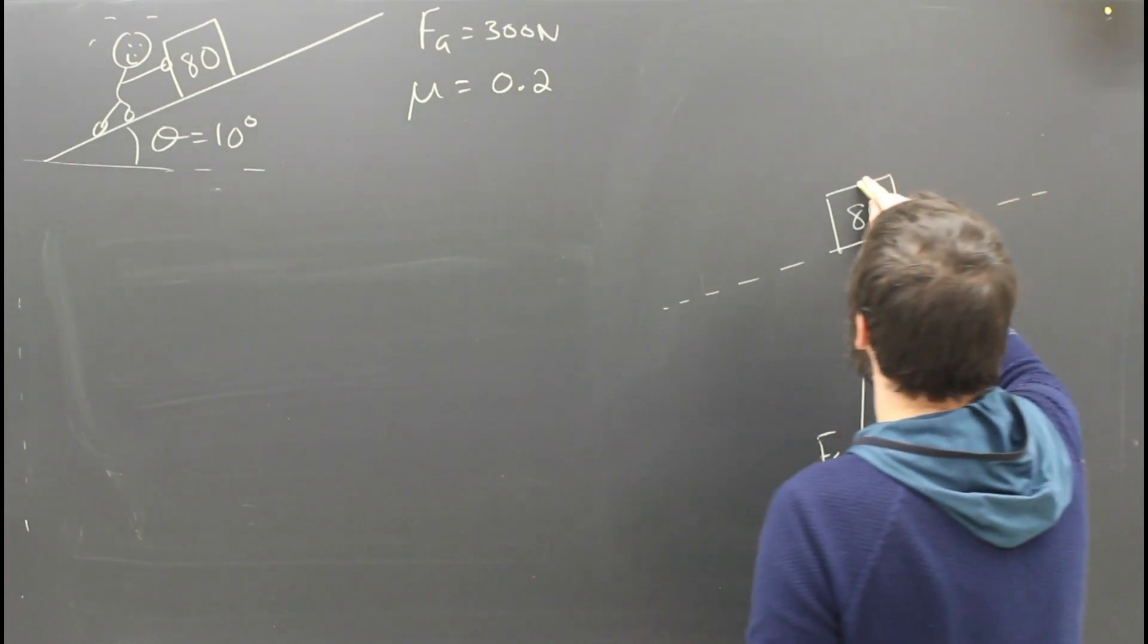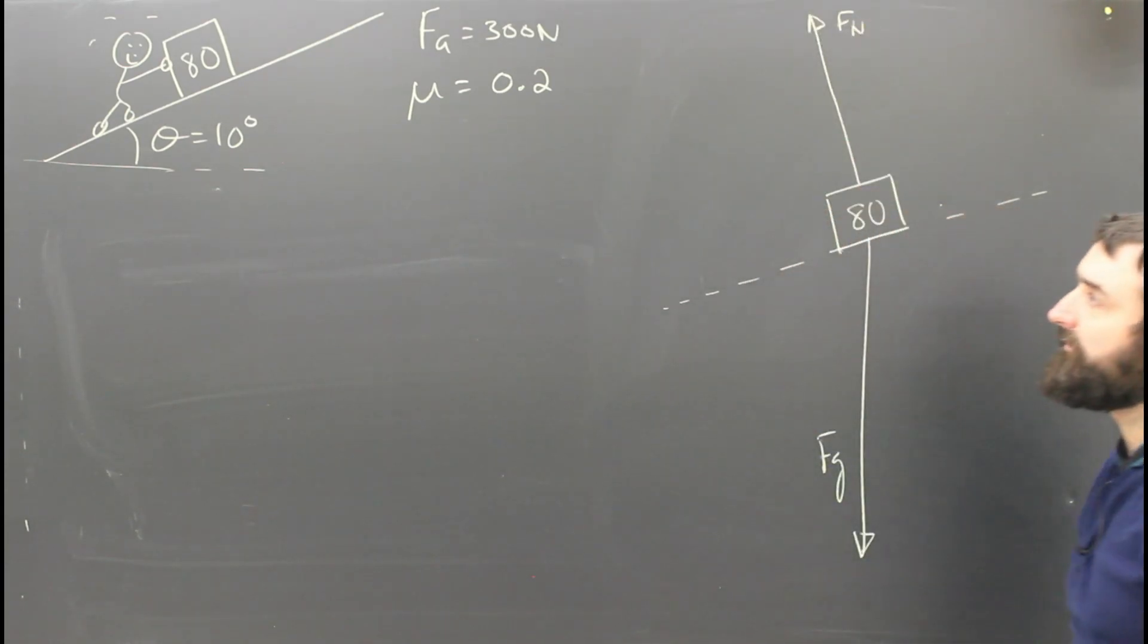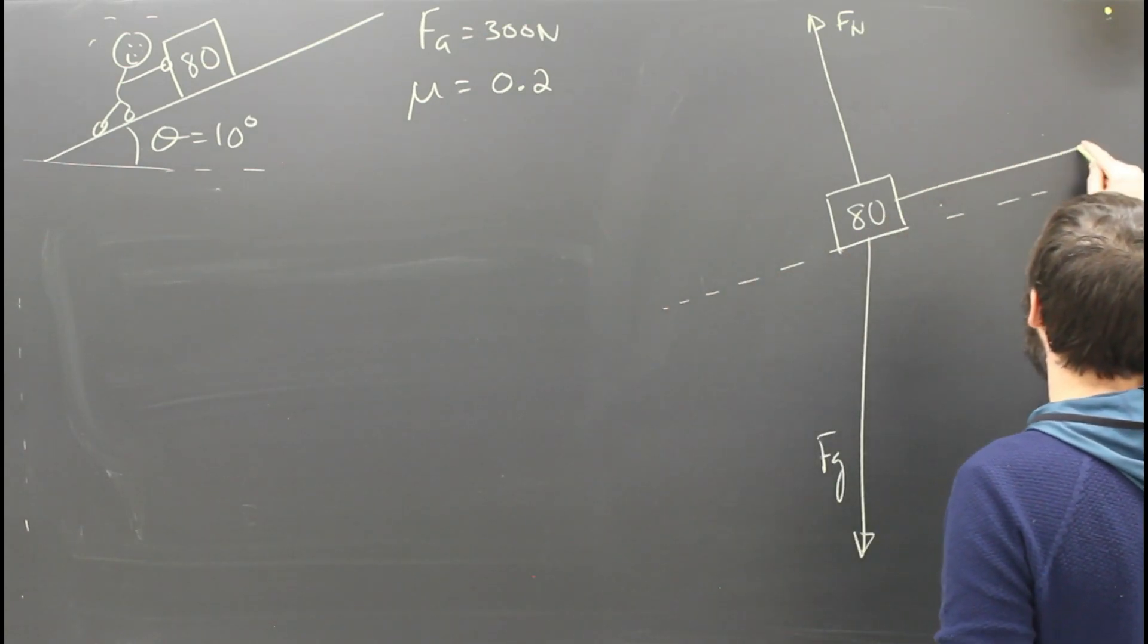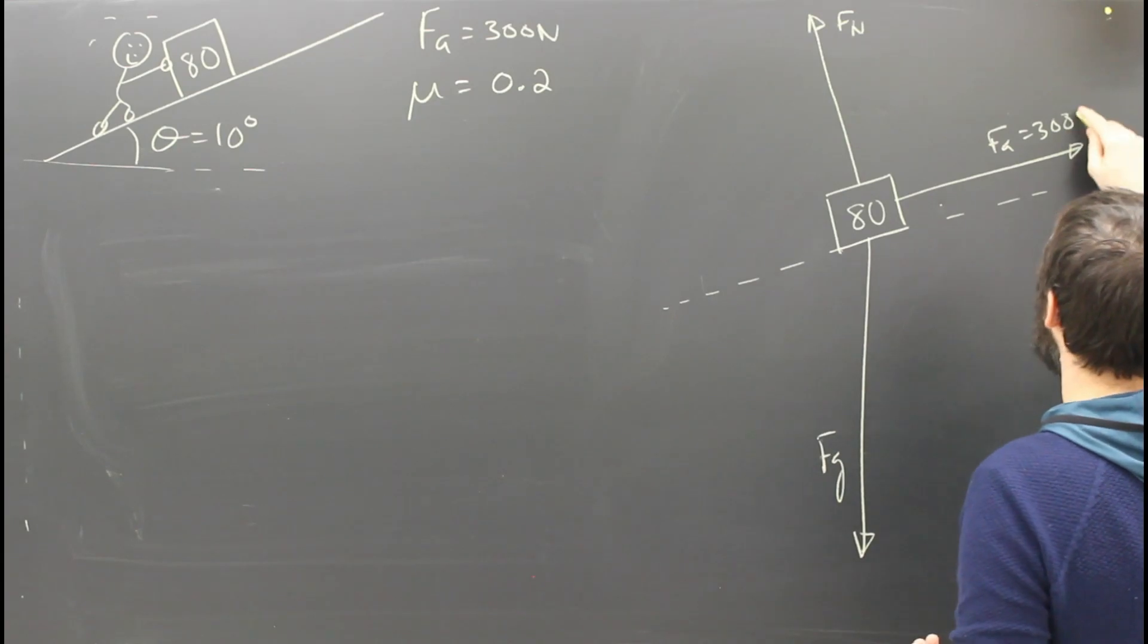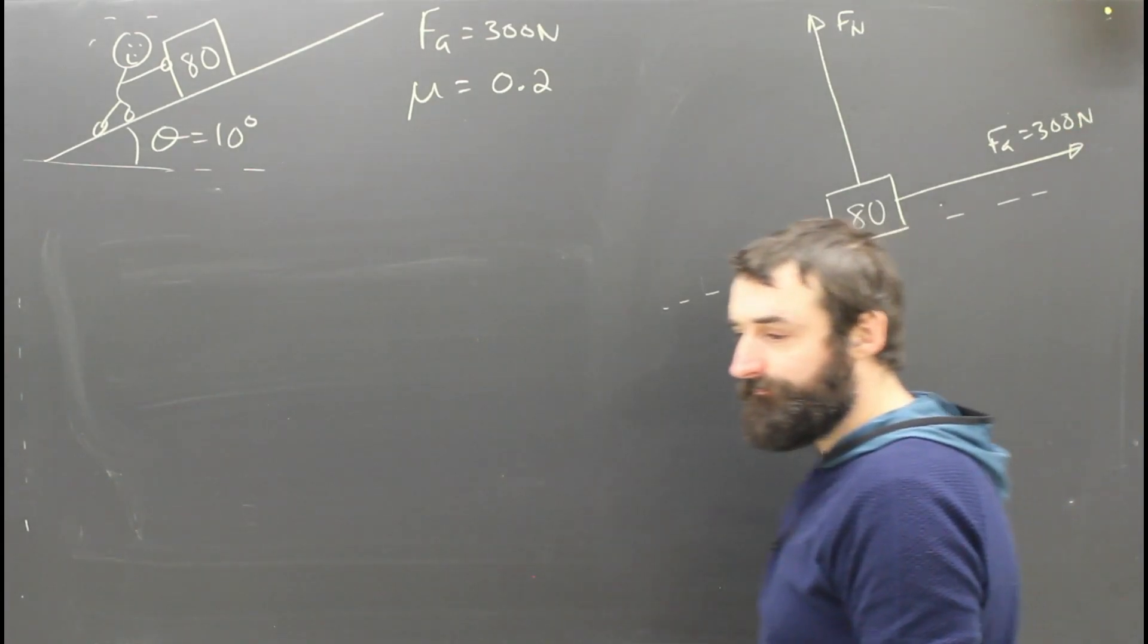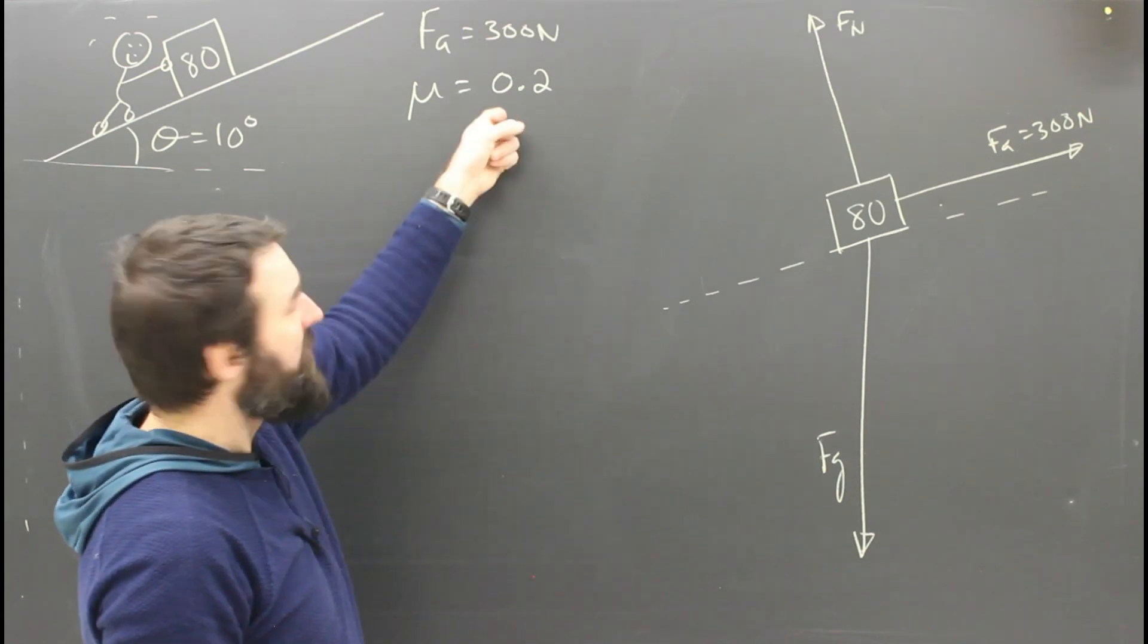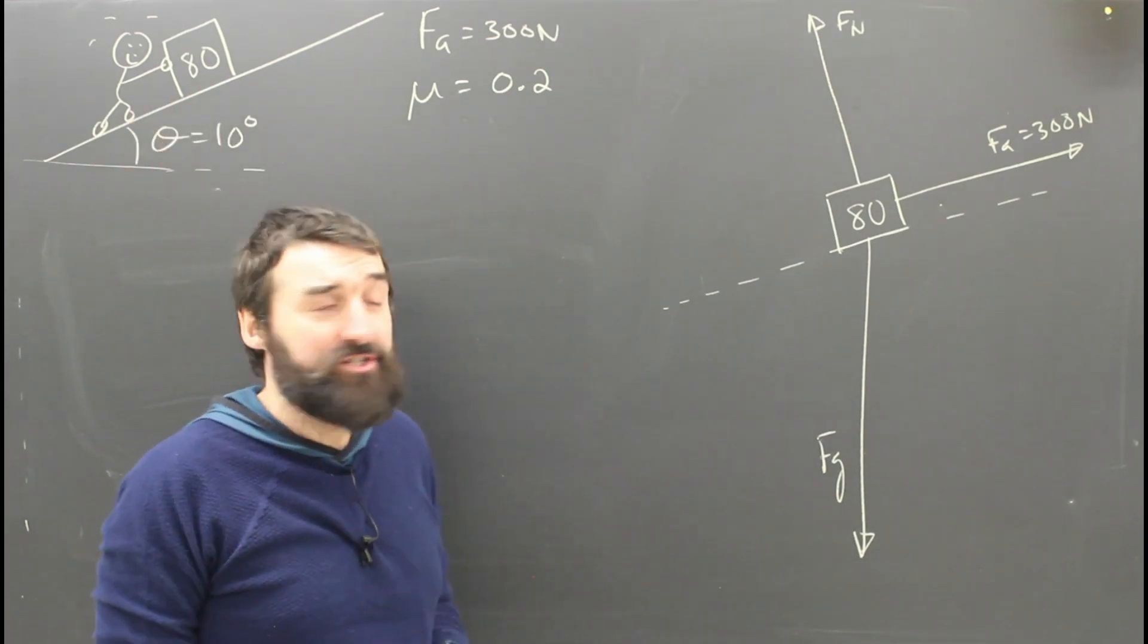The object is on a surface, so there's got to be Fn, which has to be perpendicular to the surface. Is anyone pushing it? Yeah, the dude is. He's pushing it up the ramp with a force of 300 newtons, so Fa equals 300 newtons. And is there friction? For sure you know there's friction, because there's a mu, because there's two surfaces touching, so there's always friction.